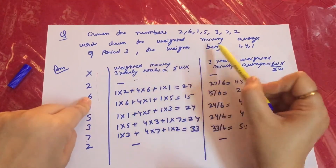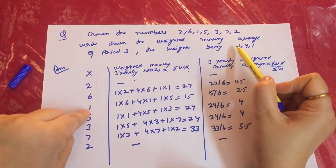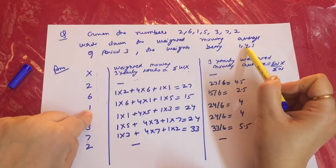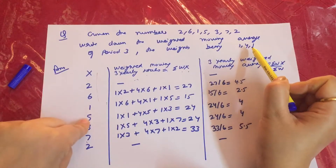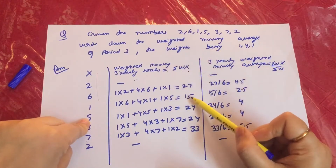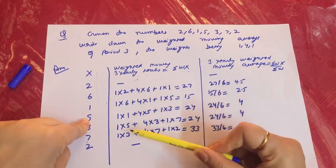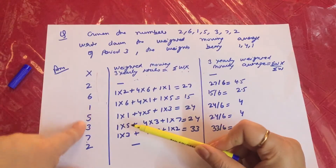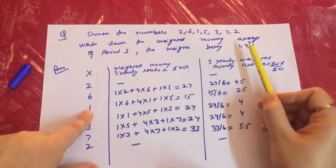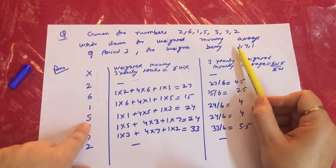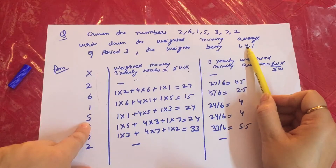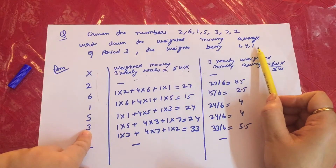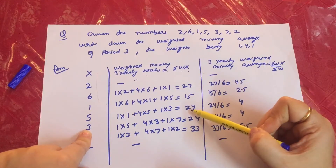The third weighted total is equal to 15. Then: 1 into 1 plus 5 into 4 plus 3 into 1 is equal to 24.